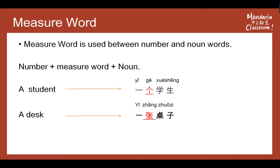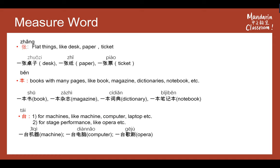And let's see the second one: 'a desk.' In Chinese we say: 一张桌子。 张 here is the measure word. 张 is a very special measure word for special noun words. 张 is used for flat things like desk, paper, and ticket. Let's see the examples. 一张桌子 — a desk. 桌子 has a big flat surface, so you have to use 张 as the measure word.